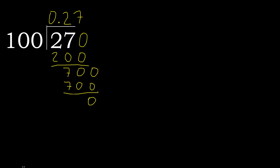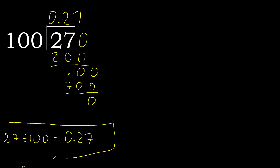Therefore finish it. 27 divided by 100 is 0.27.